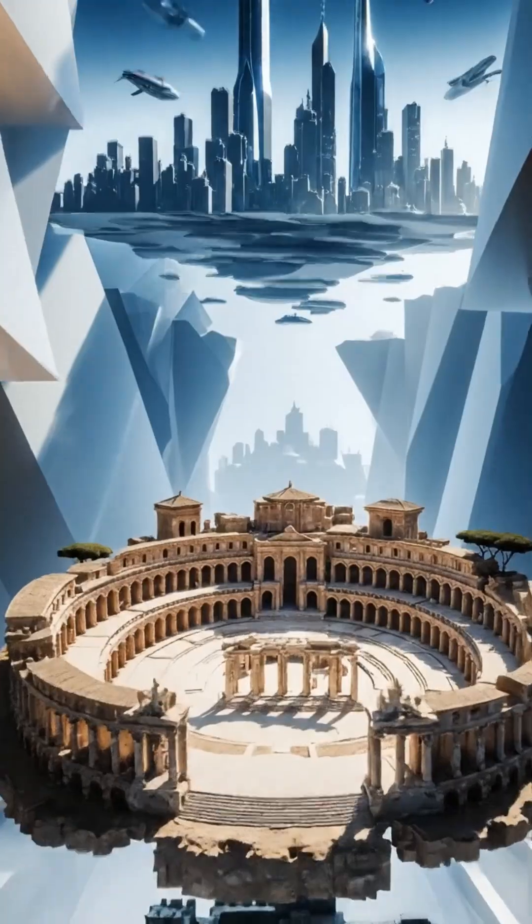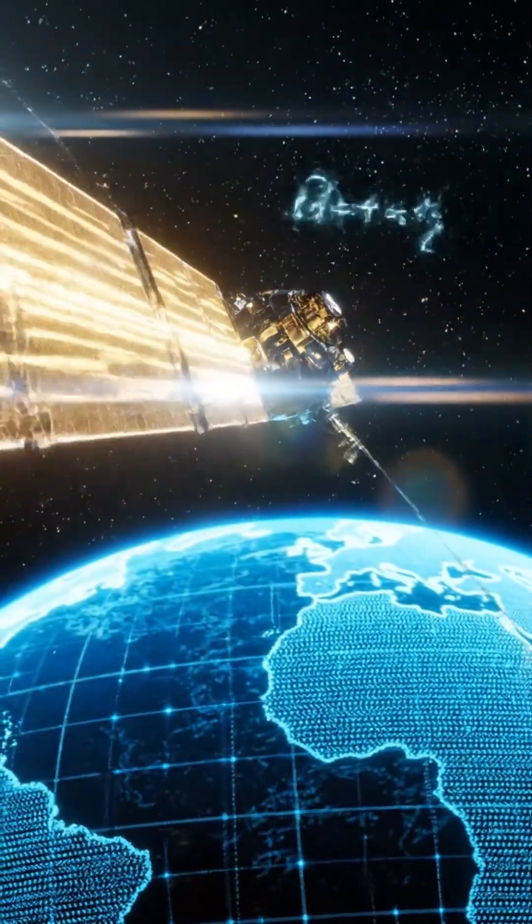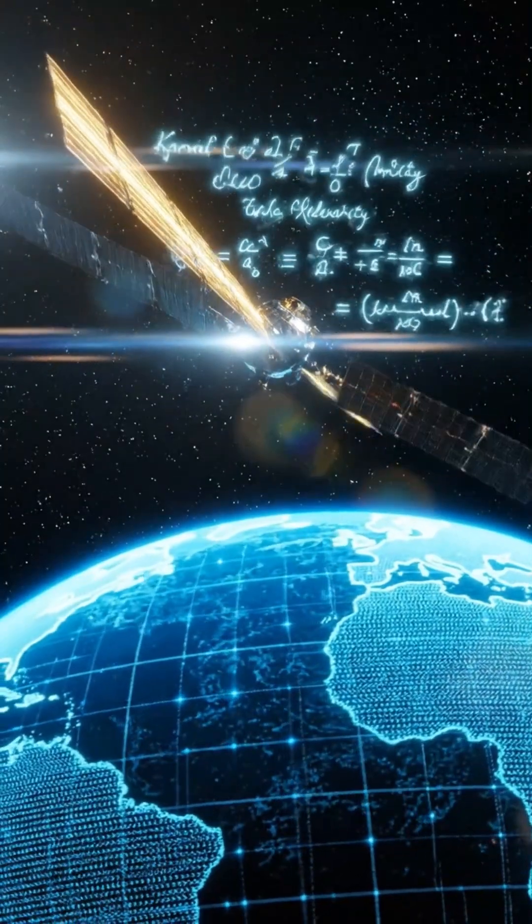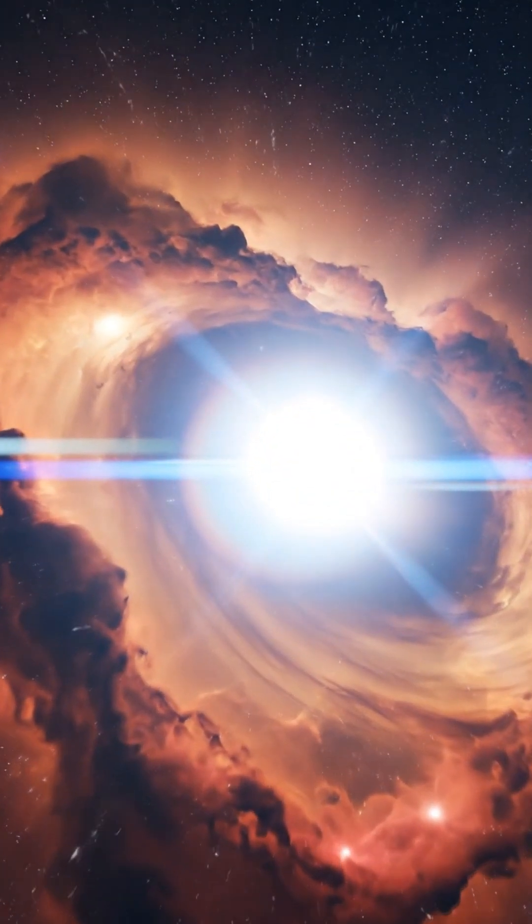It sounds abstract, but it's real. Your phone's GPS actually depends on Einstein's equations. Without them, even time itself would get lost.